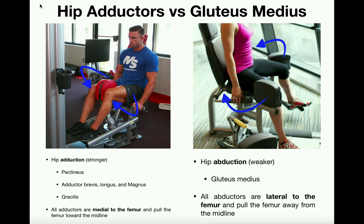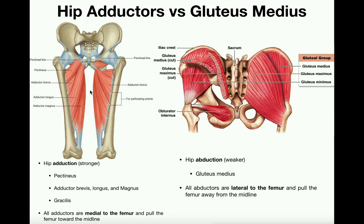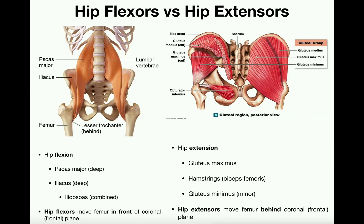These two muscle groups — the hip adductors and the gluteus medius — are antagonistic toward one another. Adduction and abduction generally occur in the frontal plane. Now we'll shift gears and talk about hip flexion and hip extension, which are movements in the sagittal plane.